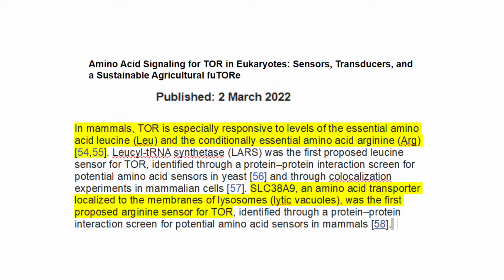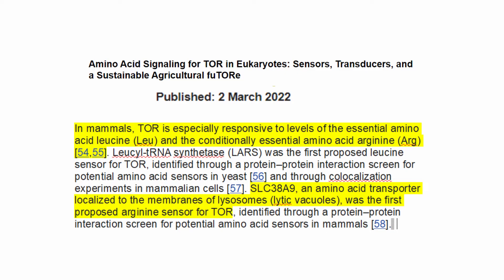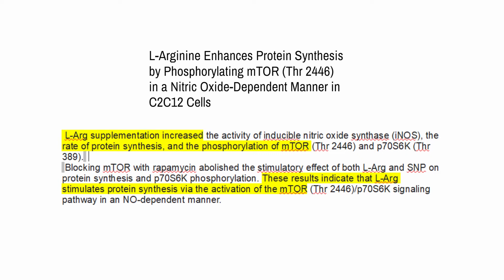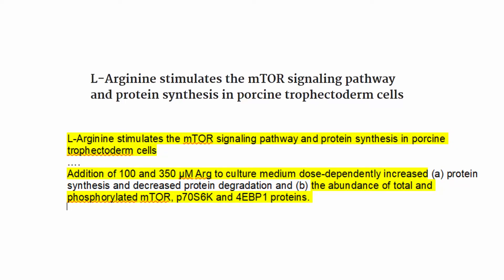This study from 2022 says: in mammals, TOR is especially responsive to levels of essential amino acids leucine and conditionally essential amino acid arginine — conditionally essential means it's not essential, as I mentioned before. SLC38A9, an amino acid transporter localized to the membranes of lysosomes, was the first proposed arginine sensor for TOR. So we know that TOR is specifically sensitive to arginine. Another study states: L-arginine supplementation increased the rate of protein synthesis and the phosphorylation of mTOR — these results indicate that L-arginine stimulates protein synthesis by activation of mTOR. A third study found that L-arginine stimulates the mTOR signaling pathway and protein synthesis in porcine cells. This is clear indication that arginine, which is really common in some plant proteins, also increases mTOR.